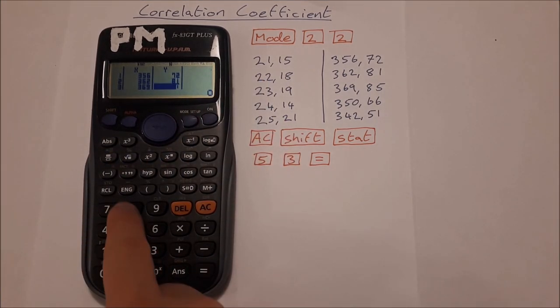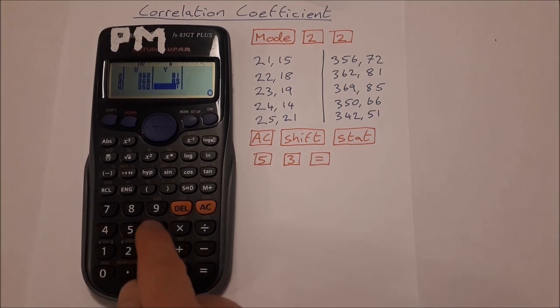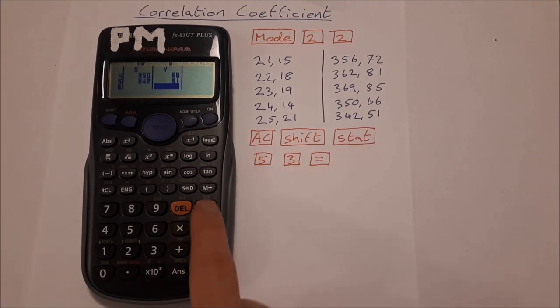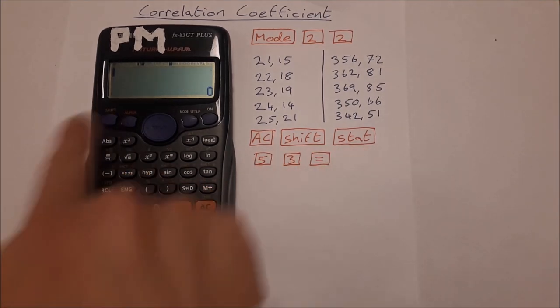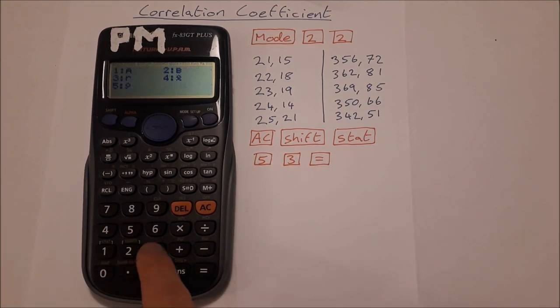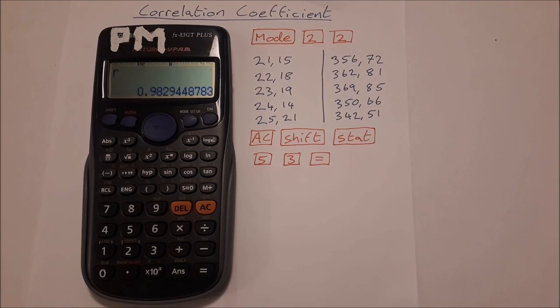So AC, Shift Stat, 5 3 equals. This time our correlation coefficient is 0.9829 and this is a much stronger correlation. This is much closer to 1.